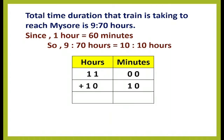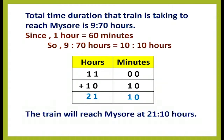We add the departure time of 11 hours to 10 hours 10 minutes. Adding: 0 plus 0 is 0, 0 plus 1 is 1, 1 plus 0 is 1, and 1 plus 1 is 2. The answer is 21 hours 10 minutes. So the train will reach Mysore at 21:10 hours.